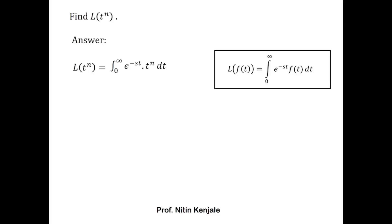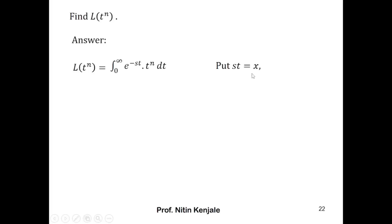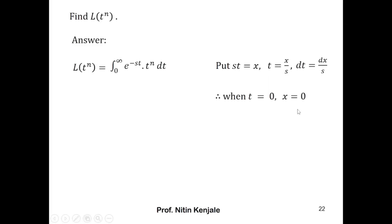Now we evaluate this integral using the substitution method. We put st equal to x, so t equals x over s, and dt equals dx over s. We check what happens to the limits: when t equals 0, x is also 0; when t equals infinity, x is also infinity. Now we transform this integral from t to x.